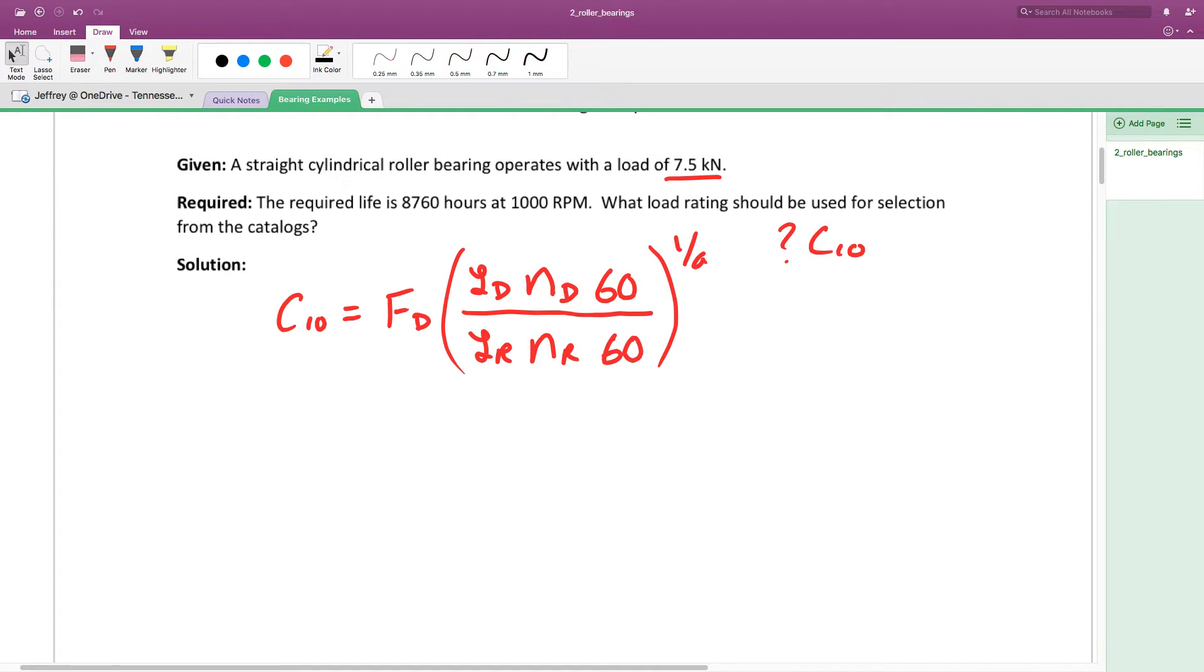A is a constant that relates to the actual type of bearing being used. In a cylindrical roller bearing, A is given as 10/3.